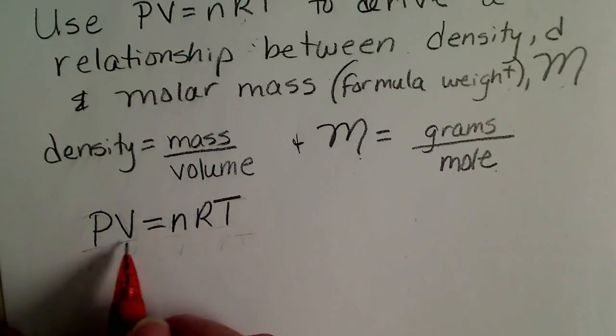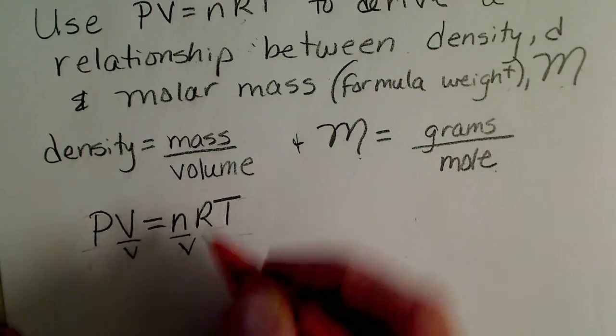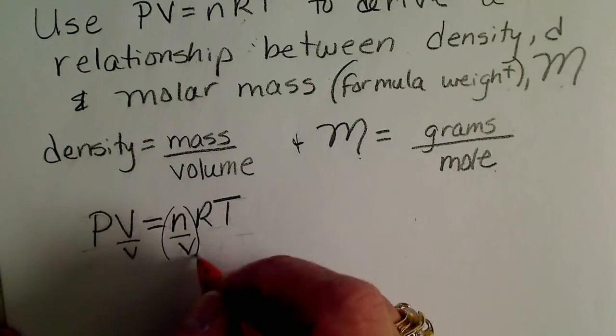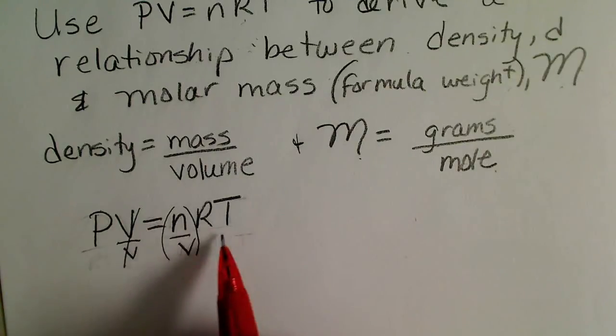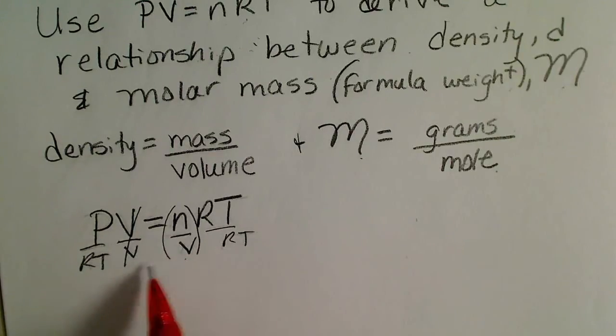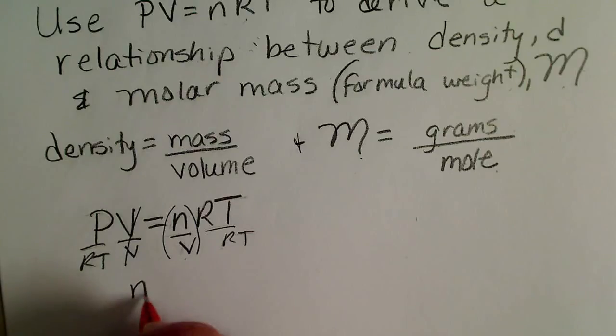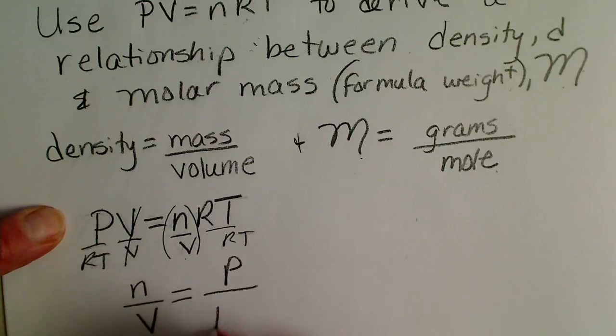What I'm going to do is take the ideal gas law and divide both sides by V. I'm trying to get this n over V all by itself, the moles per volume. So if I do that, that's gone, and then divide both sides by RT. I'm going to put the n over V on the left-hand side of the equation. So n divided by V is pressure P divided by RT.